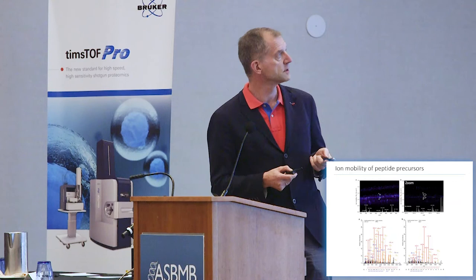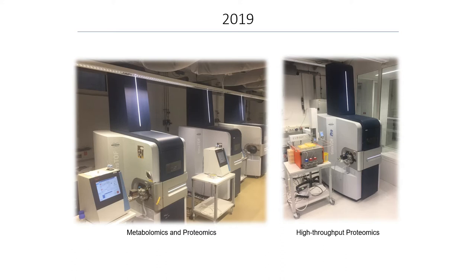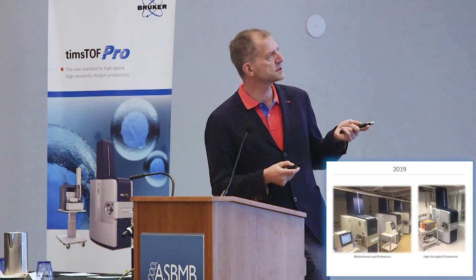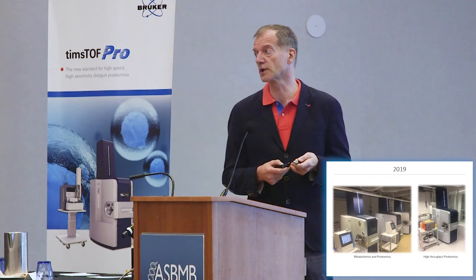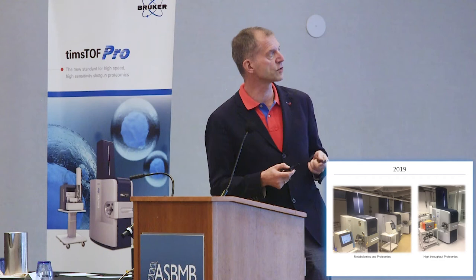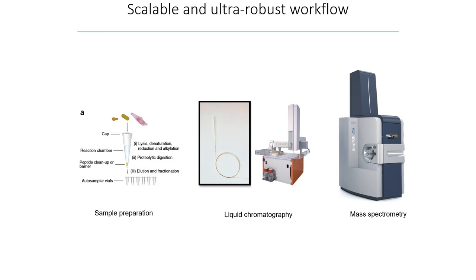We started to have these production instruments in 2018, and now we have quite a number of them — five in Munich and one in Copenhagen. We are now putting the EvoCept in front of them for robustness, giving us a very robust HPLC system. We don't need to clean these instruments, which is very important if we want to go into the clinic and correlate all patient data regardless of when they were measured. Together, these two things make the system scalable and robust.